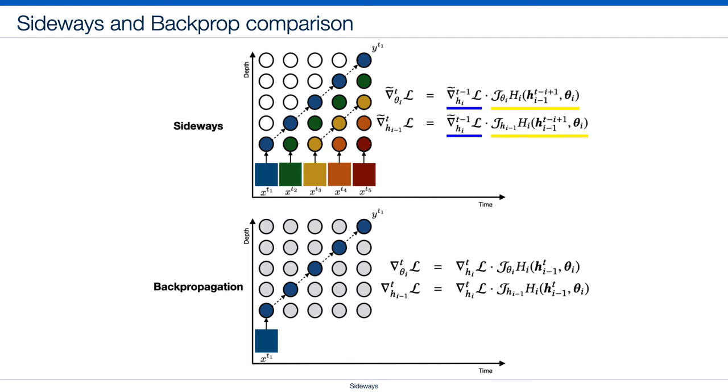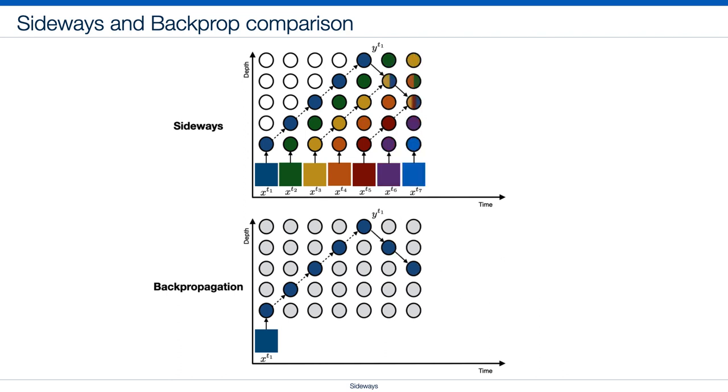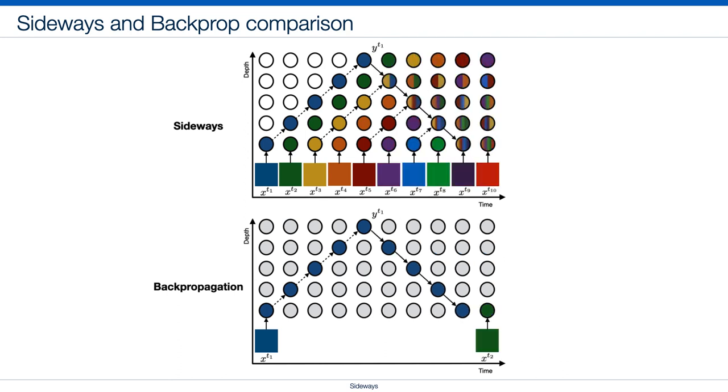For instance, here, from blue and yellow frames. When training progresses, Sideways integrates more information from different frames.